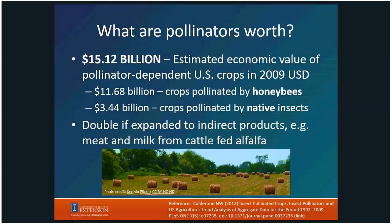If you want to be really inclusive of all the value pollinators provide, you could potentially double those numbers by including the indirect products that result from pollination services. Alfalfa and canola are referred to an awful lot — these feed stuffs go into livestock systems, and if you want to count the meat, milk, and other products that come from those animals you can really pump up your numbers.